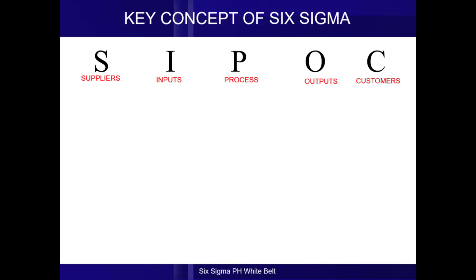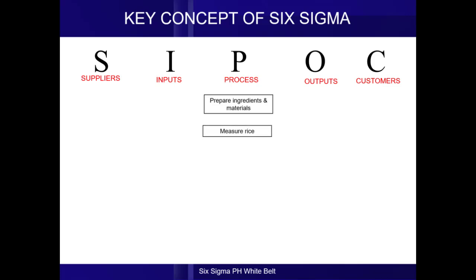A process mapping activity is a good learning exercise for all to understand and align the different perspectives of a process. The first step when we cook rice is to prepare the ingredients and materials. After that, the next step is to measure the rice, and then you wash the rice three times. This is a good learning exercise for the team to standardize process steps and learn from the different perspectives of different persons and departments.